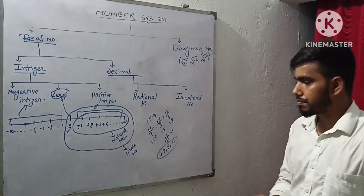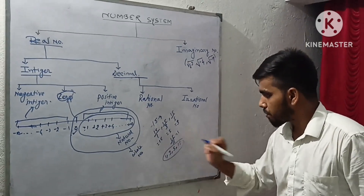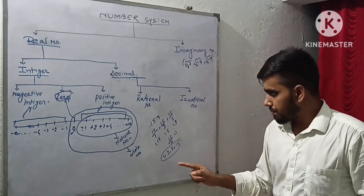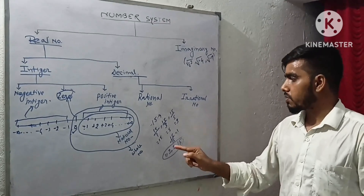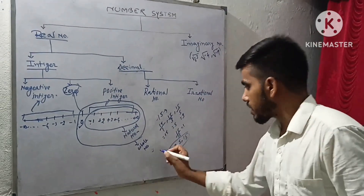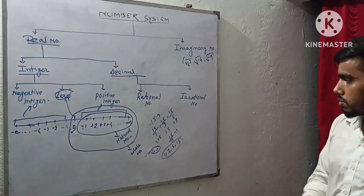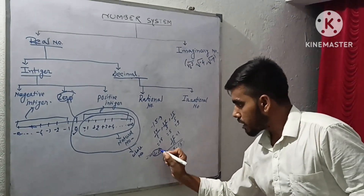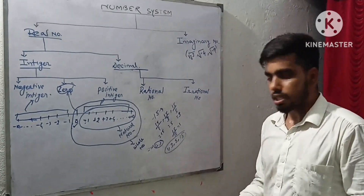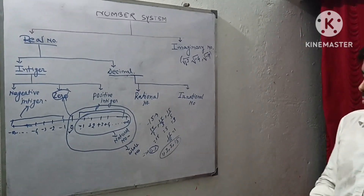You can see that 15 has four factors. If any number has more than two factors, it is called a composite number. But if we take 3, its factors are just 1 and 3 — only two factors. So if any number has exactly two factors, it is called a prime number. This is the difference between prime numbers and composite numbers.